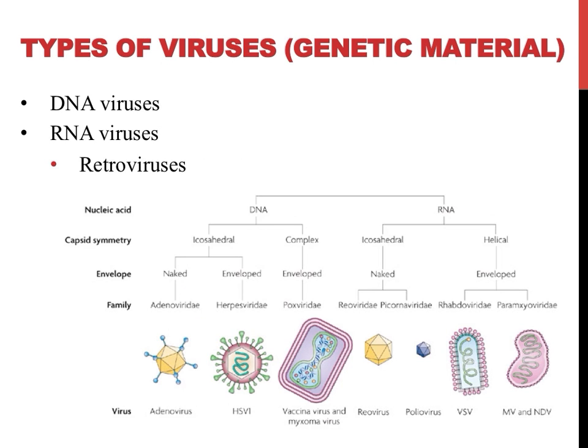Another way that viruses can be classified is by their genetic material. As the image on this slide shows, viral shape, the presence of an envelope, as well as the type of genetic material, can help to break down the potential 100 million viruses on Earth into some orderly fashion.